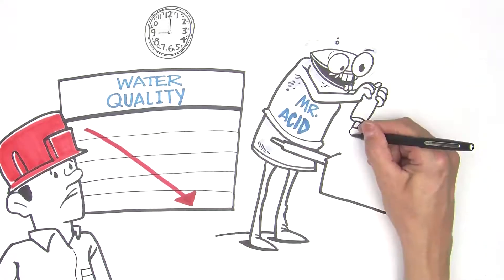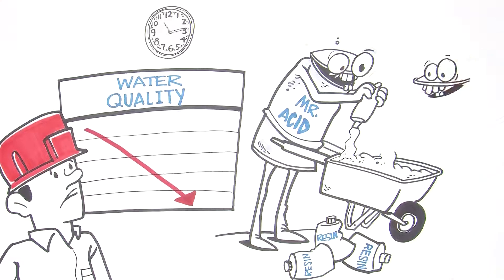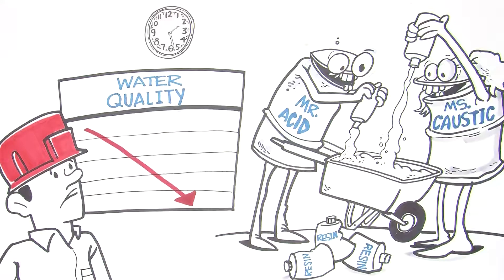So quality begins high and declines, requiring downtime and laborers or service providers to exchange spent resin with fresh resin, or to regenerate the resin using hazardous chemicals on site or at a regeneration facility.